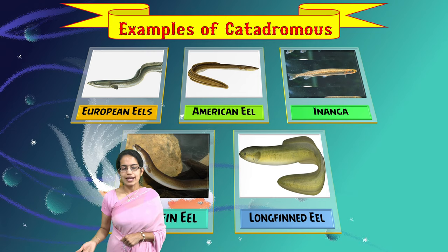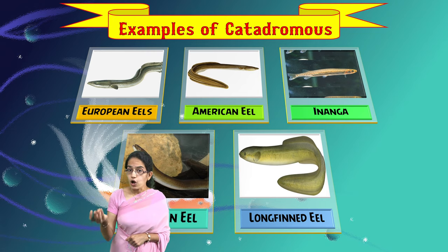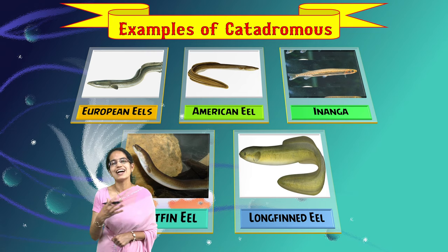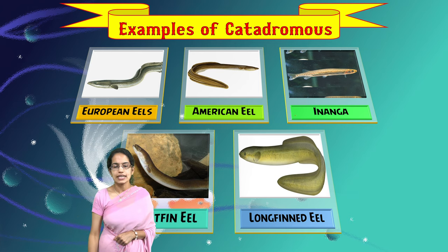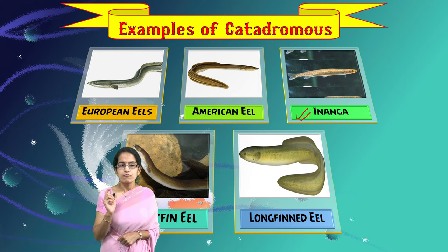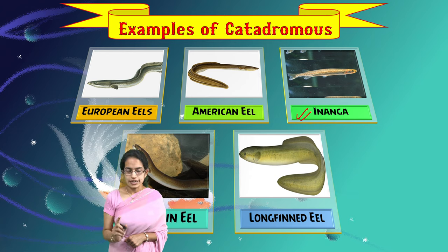European eel, American eel, long-finned eel, and short-finned eel are some examples of catadromous fishes. Besides that, Inanga is another important example of a catadromous fish.